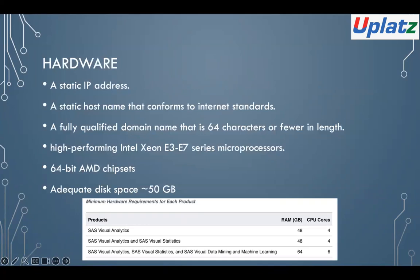If your environment is licensed for Visual Analytics components, the requirements include 48 GB of RAM and 4 CPU cores for Visual Analytics. If you have Visual Statistics, Visual Data Mining, and Machine Learning together, you need 64 GB of RAM and at least 6 CPU cores. For deep learning using SAS Visual Data Mining and Machine Learning, SAS recommends using a GPU — specifically NVIDIA graphics and media display drivers for the platform to run appropriately.